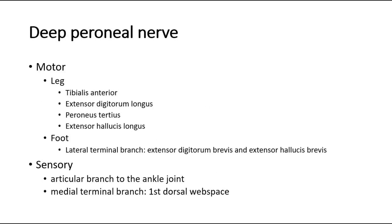Next we look at the deep perineal nerve. It supplies motor to the leg and foot, including the tibialis anterior, extensor digitorum longus, perineus tertius, extensor hallucis longus, and via its lateral terminal branch, the extensor digitorum brevis and extensor hallucis brevis.